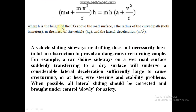Here h is the height of the center of gravity above the road surface, r is the radius of the curved path, m is the mass of the vehicle, and a is the lateral deceleration. Taking m as common, the overturning couple becomes m·h·(a + v²/r).